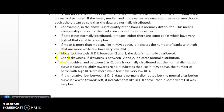Next, after checking mean, median, and mode, check for kurtosis. Kurtosis is another important descriptive statistic that needs a mention. If kurtosis is between minus 2 and plus 2, it indicates that the data is normally distributed. If kurtosis is more than plus 2 or less than minus 2, the data is not normally distributed. Similarly, check for skewness — if skewness is between minus 2 and plus 2, that also indicates the data is normally distributed.